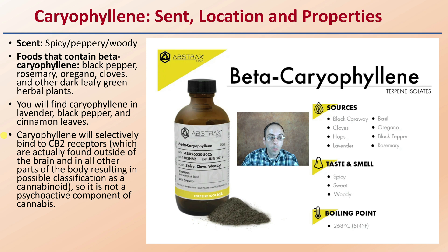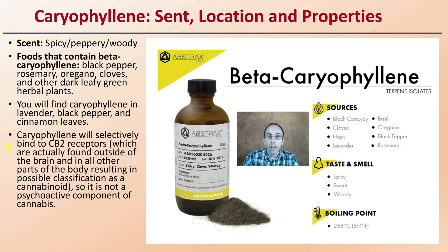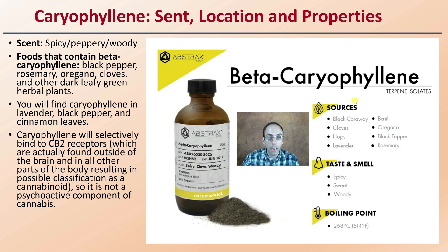Karyophyllene will selectively bind to CB2 receptors, which are actually found outside of the brain and other parts of the body, resulting in a possible classification as a cannabinoid. Currently it is classified as a terpene, simply because it's not a psychoactive component of cannabis — that's probably what's causing it to fall into the terpene category.